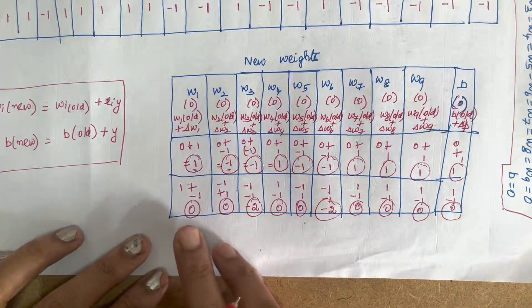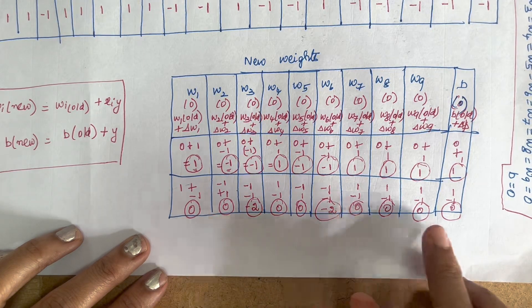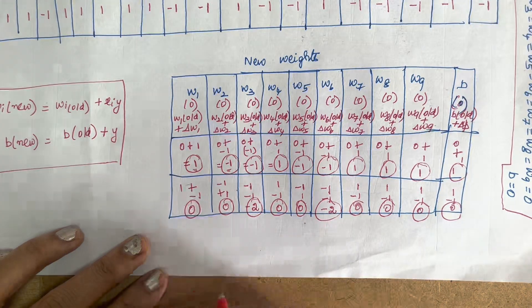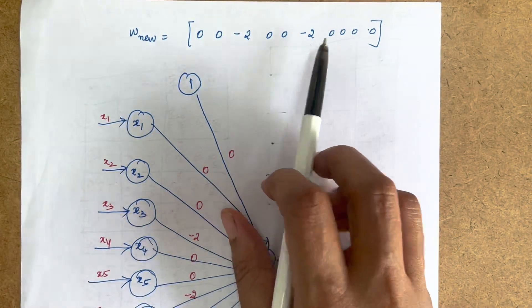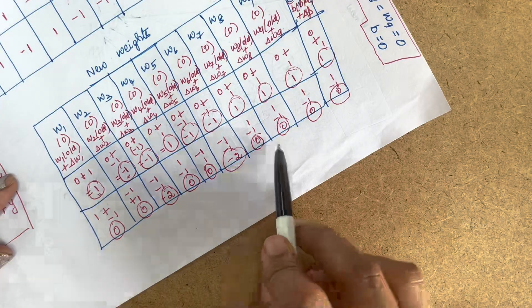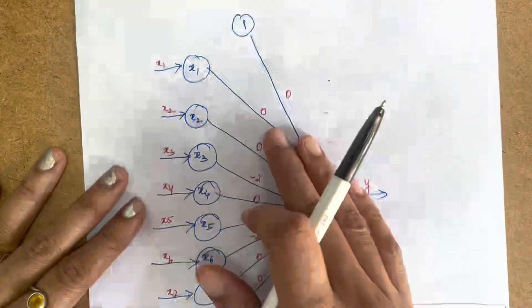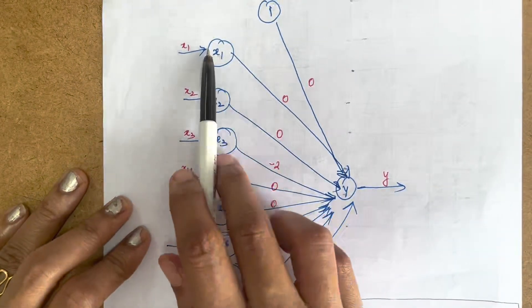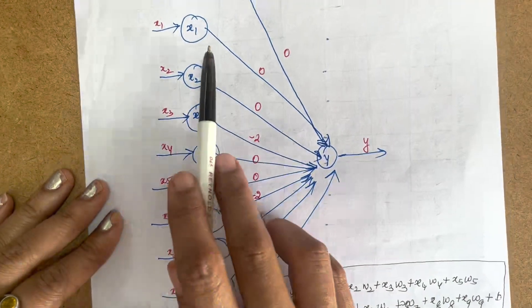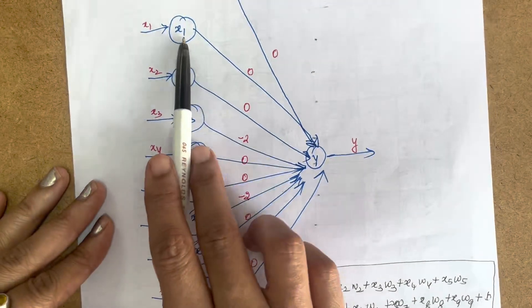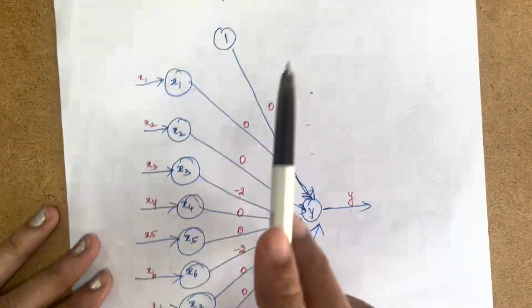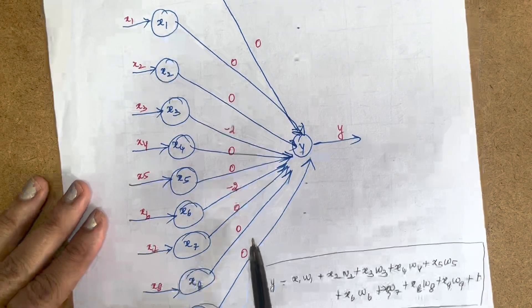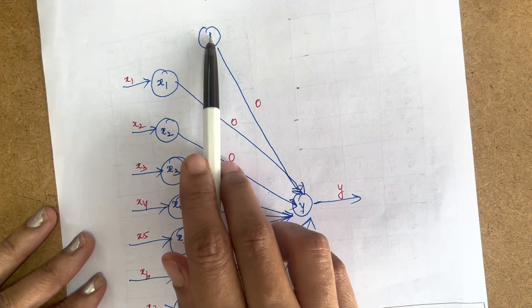The final weights obtained from the HEP network are: W1=0, W2=0, W3=−2, W4=0, W5=0, W6=−2, W7=0, W8=0, W9=0, and bias b=0. In the HEP diagram, inputs X1 to X9 are all connected to output Y with these weights: 0, 0, −2, 0, 0, −2, 0, 0, 0, and the bias is 0.